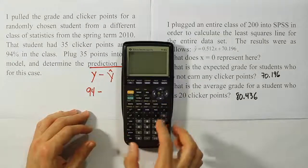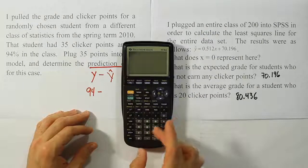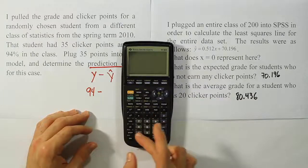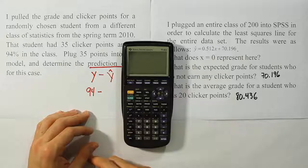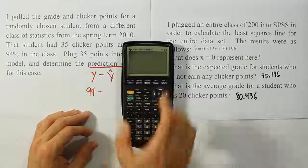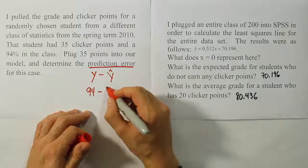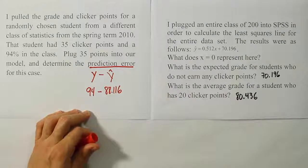Okay, so we're going to have 0.512 times 35 plus 70.196. And when you do that, you get the answer 88.116. So this answer here is 88.116.